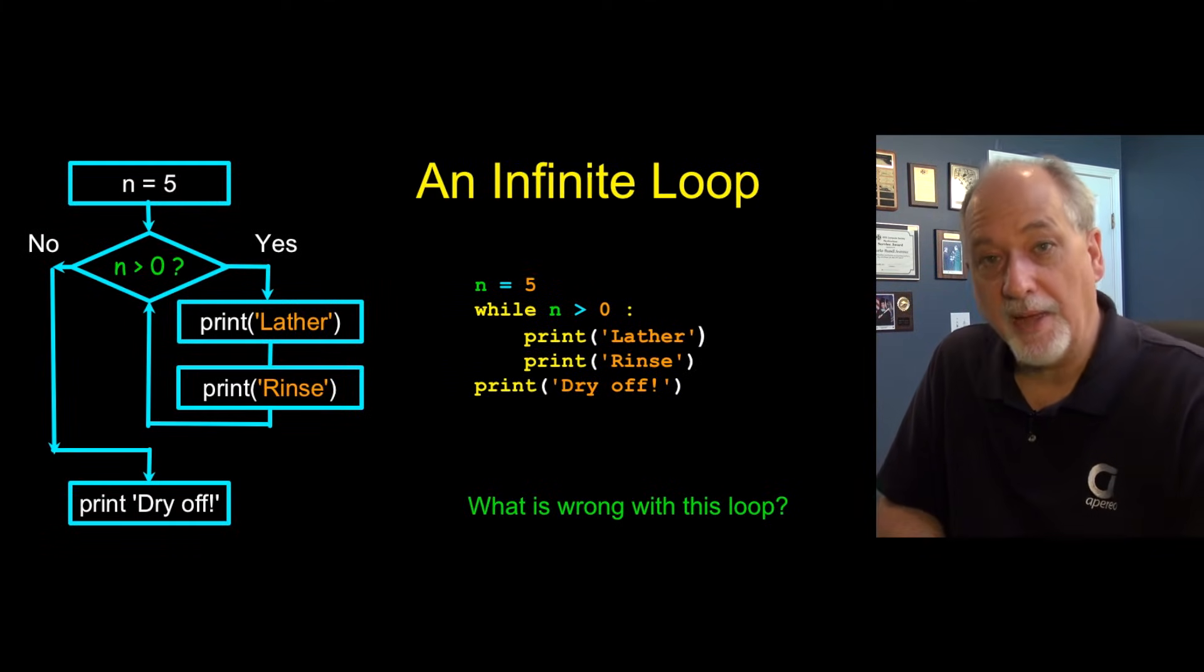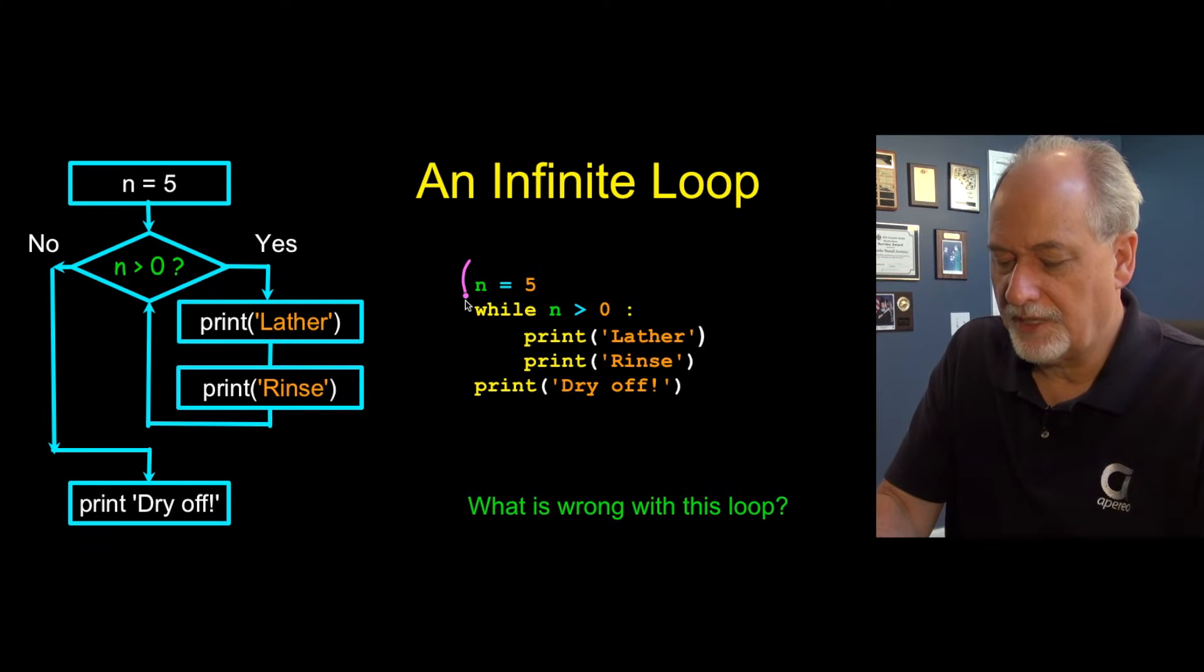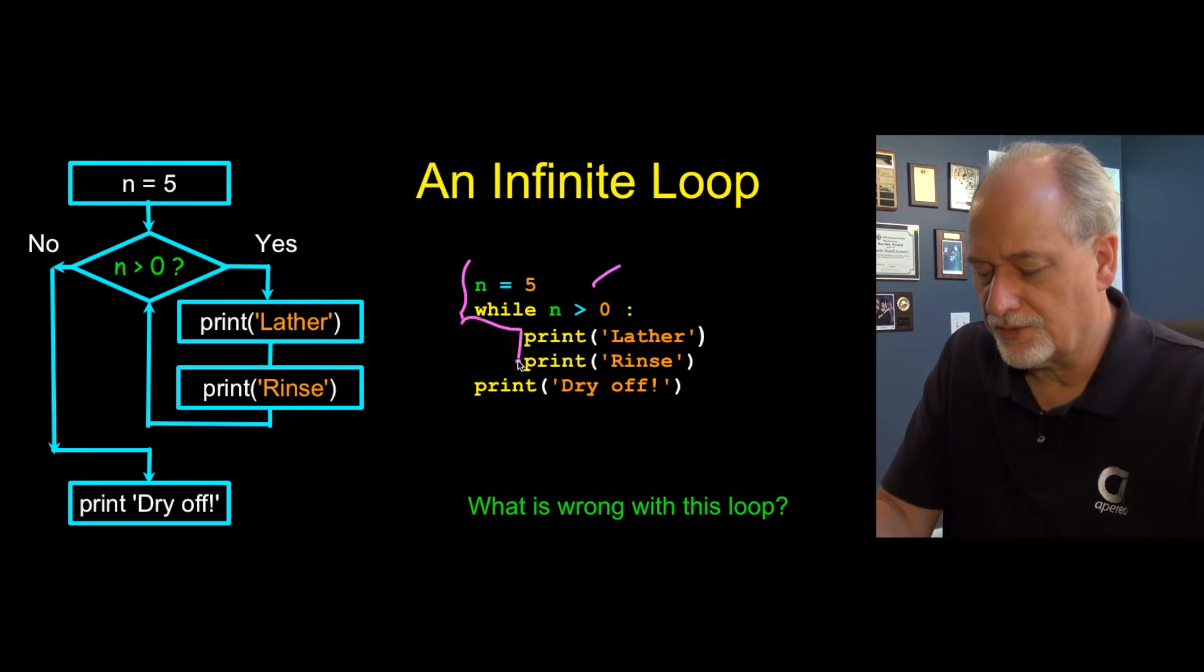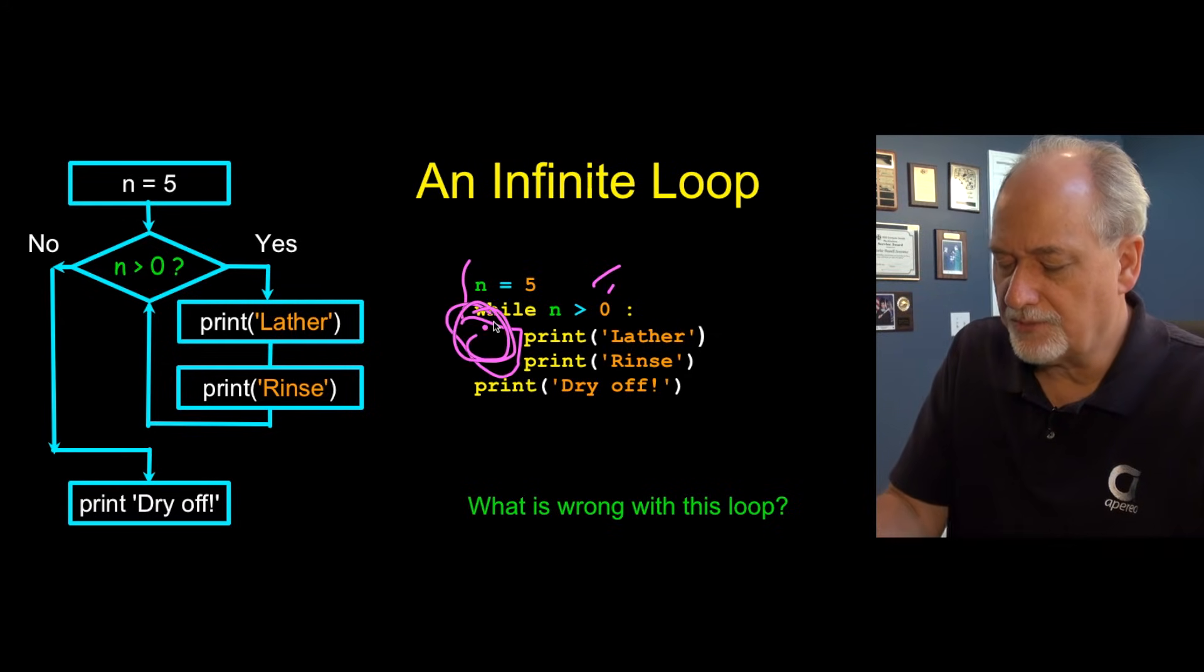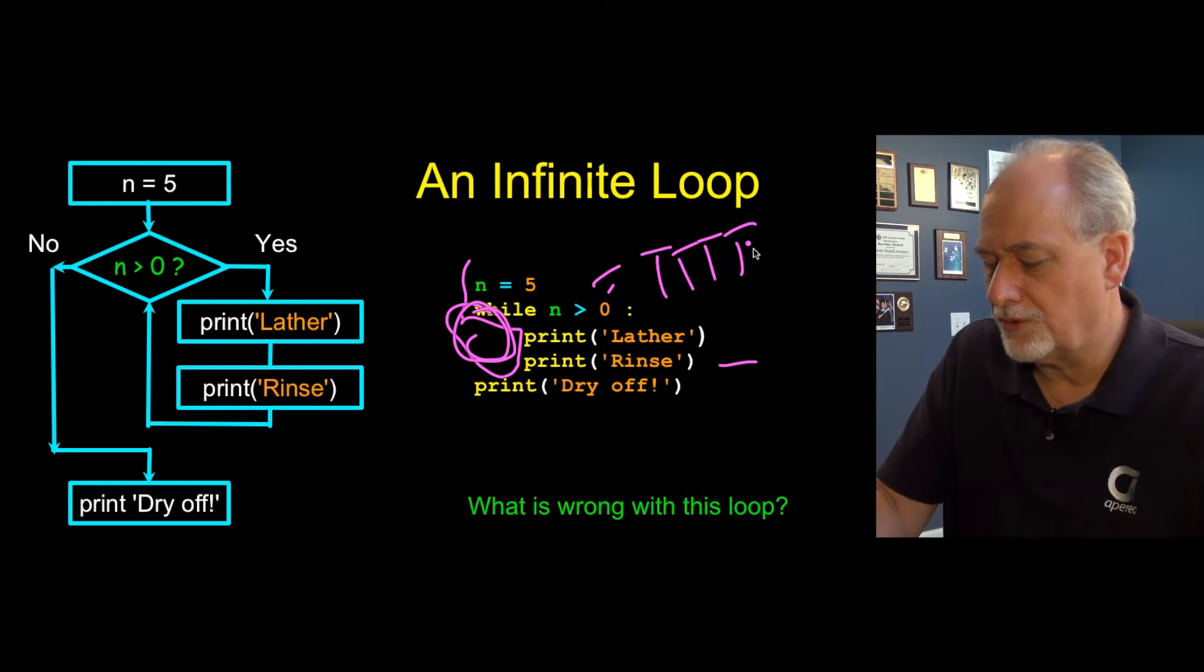So this is a badly constructed loop with an iteration variable that we didn't do very well. And so if we take a look at this, we start out with n five and then this is greater than zero. So it's true, so it runs it, and then it runs it again, and then it's still greater than zero. So you can pretty much see, because we're not changing n. This is going to be true, true, true, true, forever.